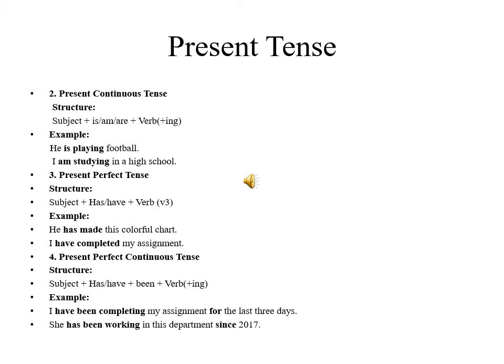I am studying in high school. The third type of present tense is present perfect tense. Its structure is subject plus have or has plus verb third form. Example, he has made his colourful chart. I have completed my assignment.